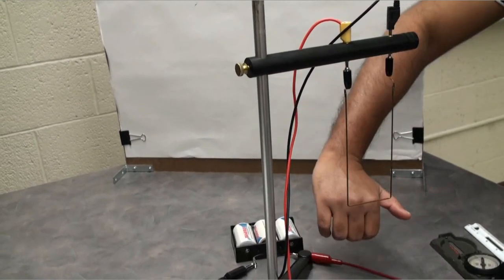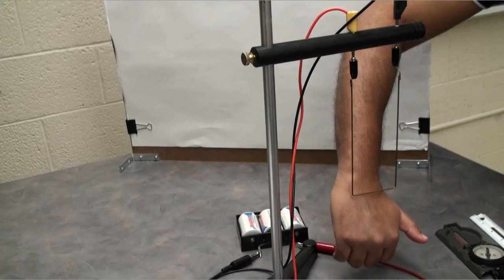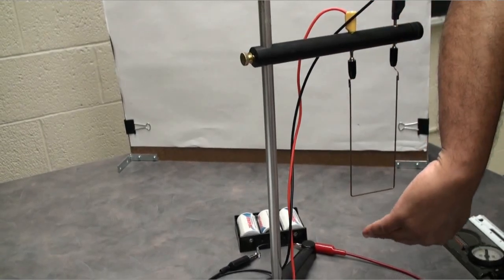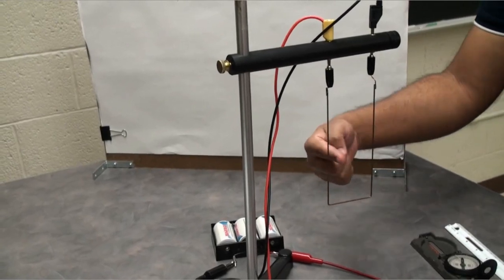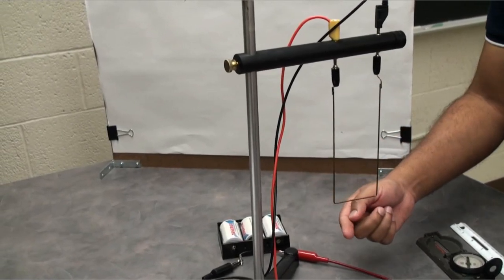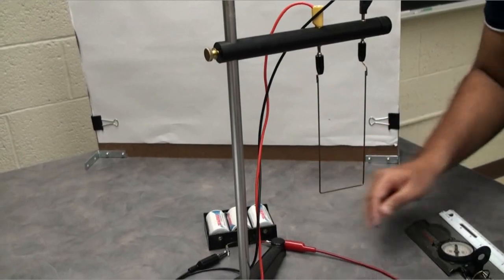But if you consider the outside of the loop, the other four fingers point inward. So which means inside the loop, the magnetic field comes out and outside of the loop, magnetic field goes in.